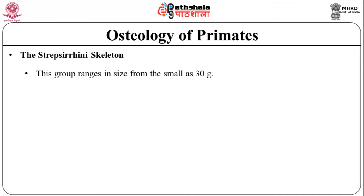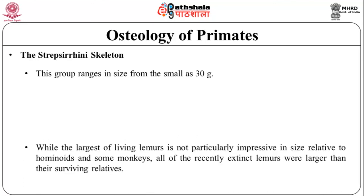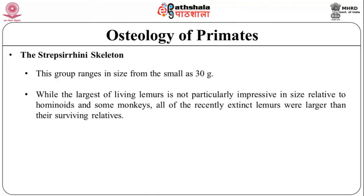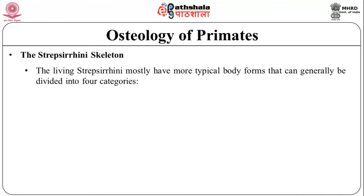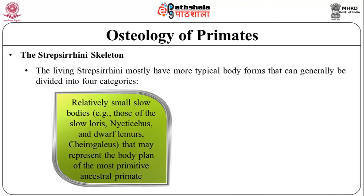Now let us discuss the Strepsirhini skeleton. This group ranges in size from the smallest at 30 grams. While the largest of living lemurs is not particularly impressive in size relative to hominoids and some monkeys, all of the recently extinct lemurs were larger than their surviving relatives. The largest of these, Archaeoindris, may have been nearly 200 kilograms, larger than most living hominoids. The living Strepsirhini mostly have more typical body forms that can generally be divided into four categories. Number one: the relatively small, slow bodies — for example, those of the slow loris, Nycticebus, and dwarf lemurs, Cheirogaleus — that may represent the body plan of the most primitive ancestral primate.